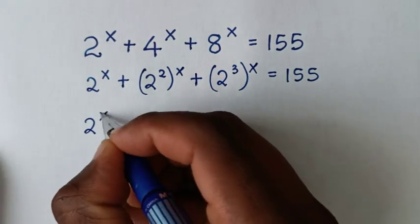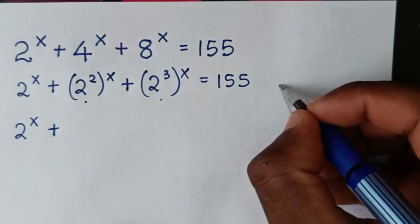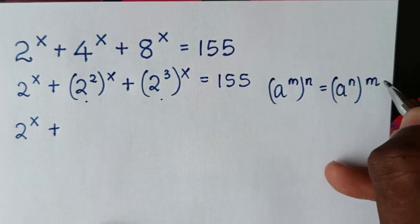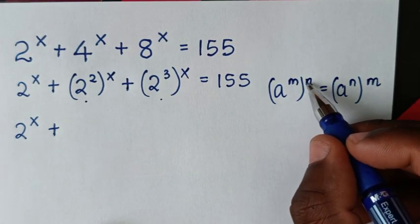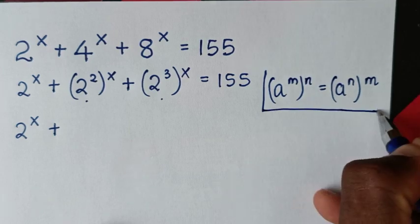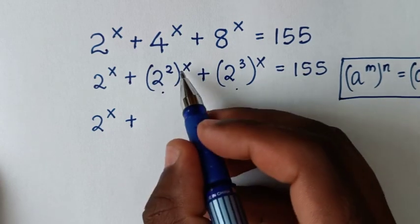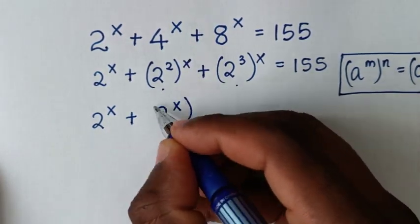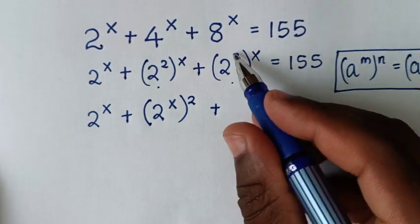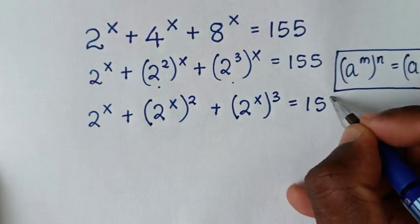Then it will be 2^x plus, using the exponent rule where a^m raised to power n equals a^(m times n), we exchange the powers. For the 4^x term, power of x goes inside and power of 2 goes outside, giving (2^x)^2. For the 8^x term, power of x goes inside and power of 3 goes outside, giving (2^x)^3, is equal to 155.